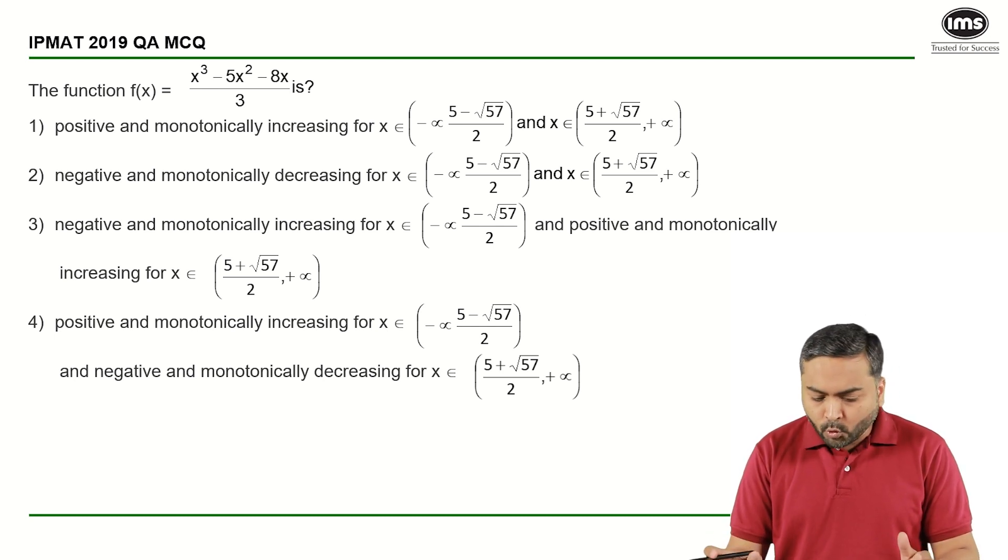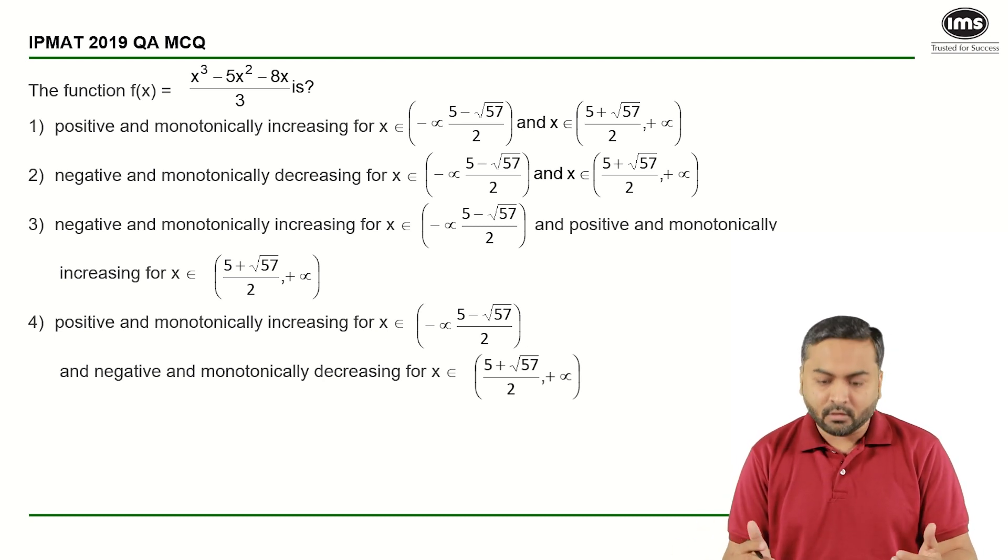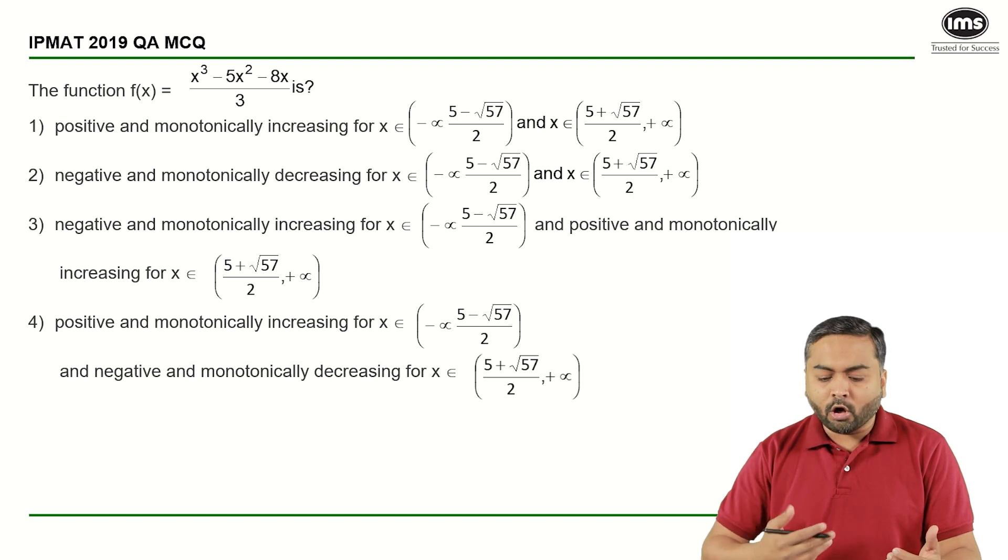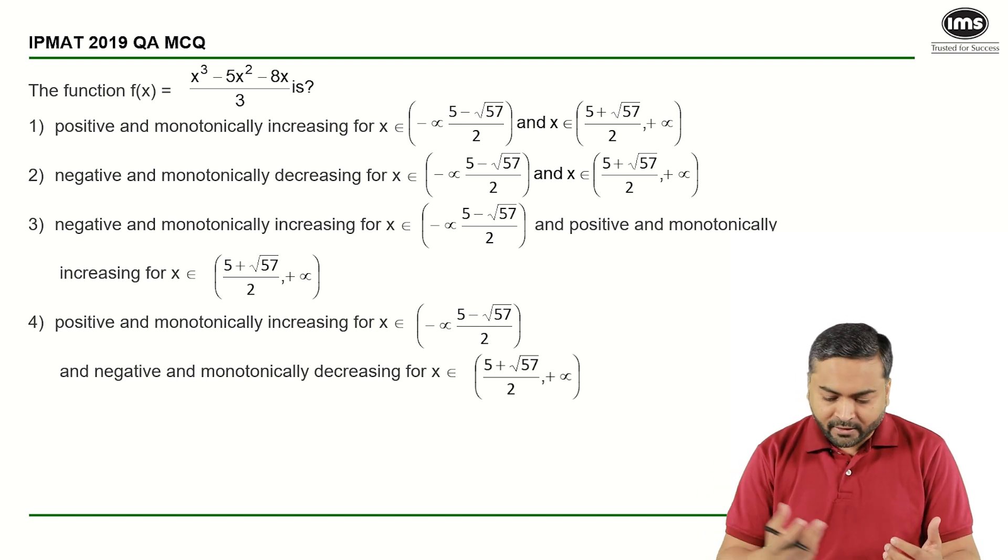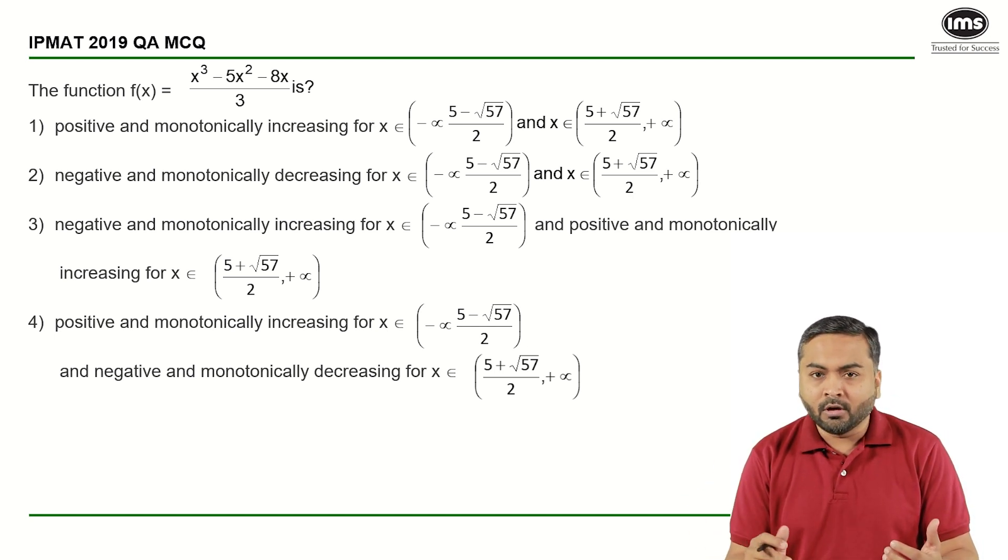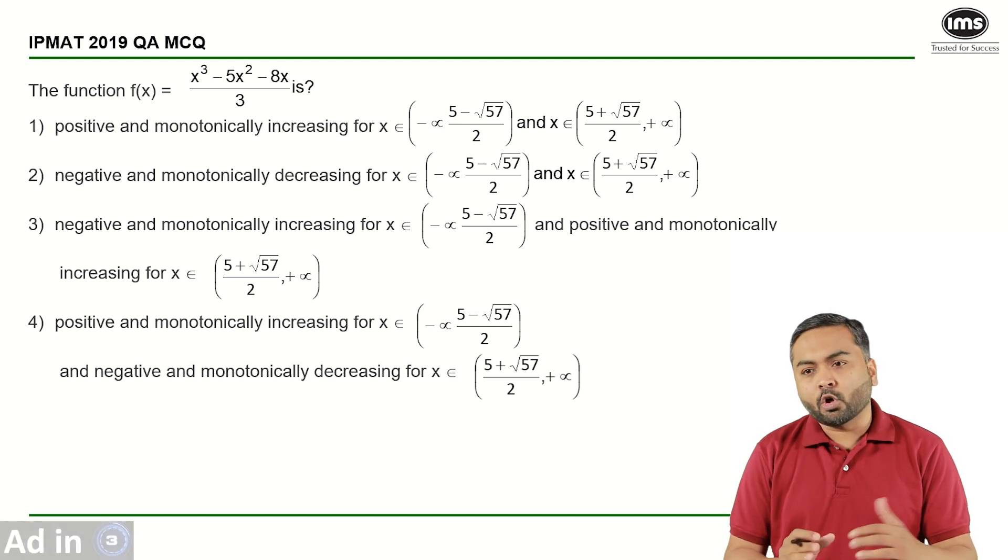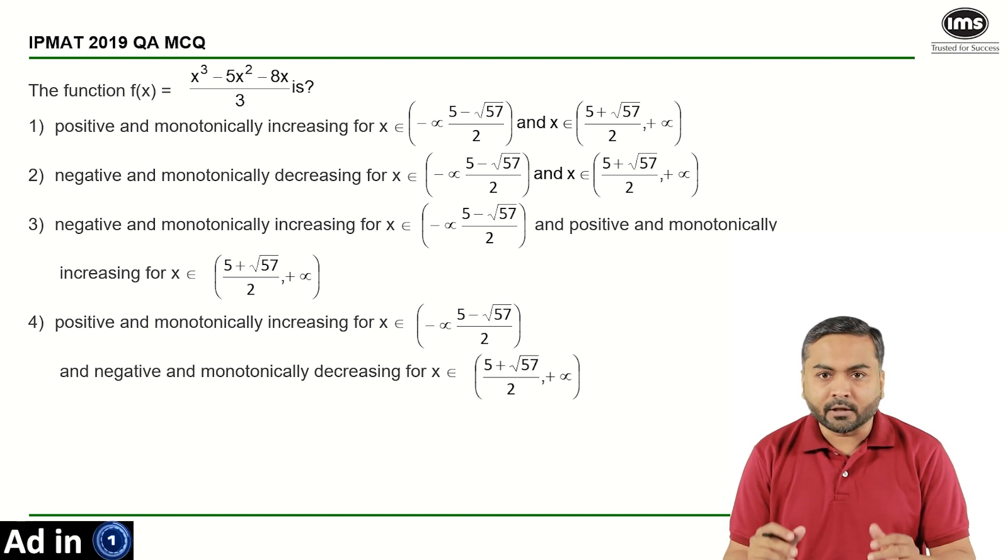Now most of the students would probably not solve this particular question looking at the options, the way it is designed. The numbers are not great: 5 minus root 7 and 5 plus root 7. Sometimes it says monotonically increasing, monotonically decreasing, and all those various stuff.